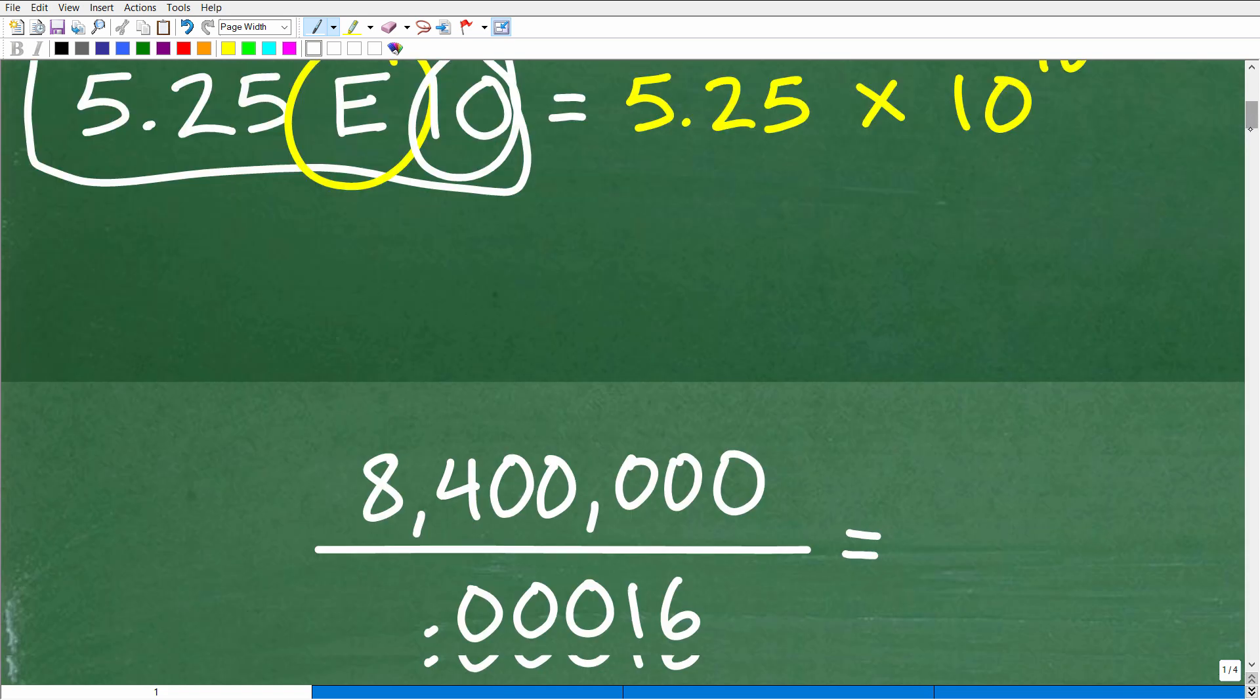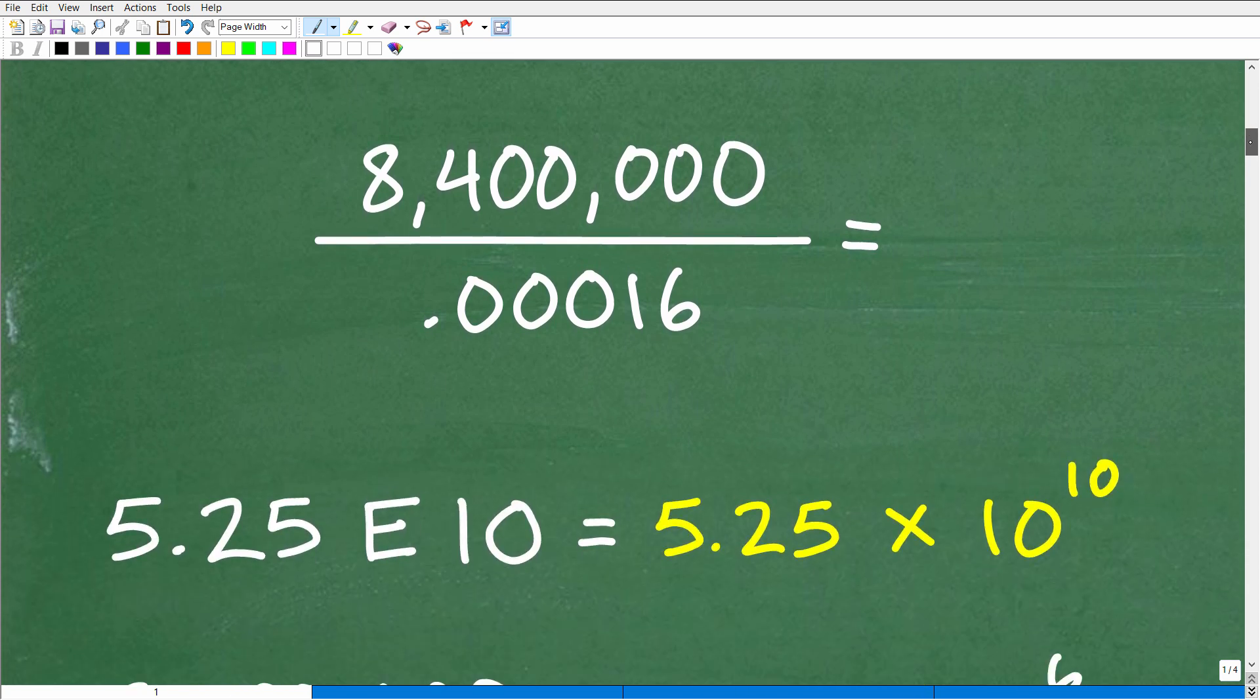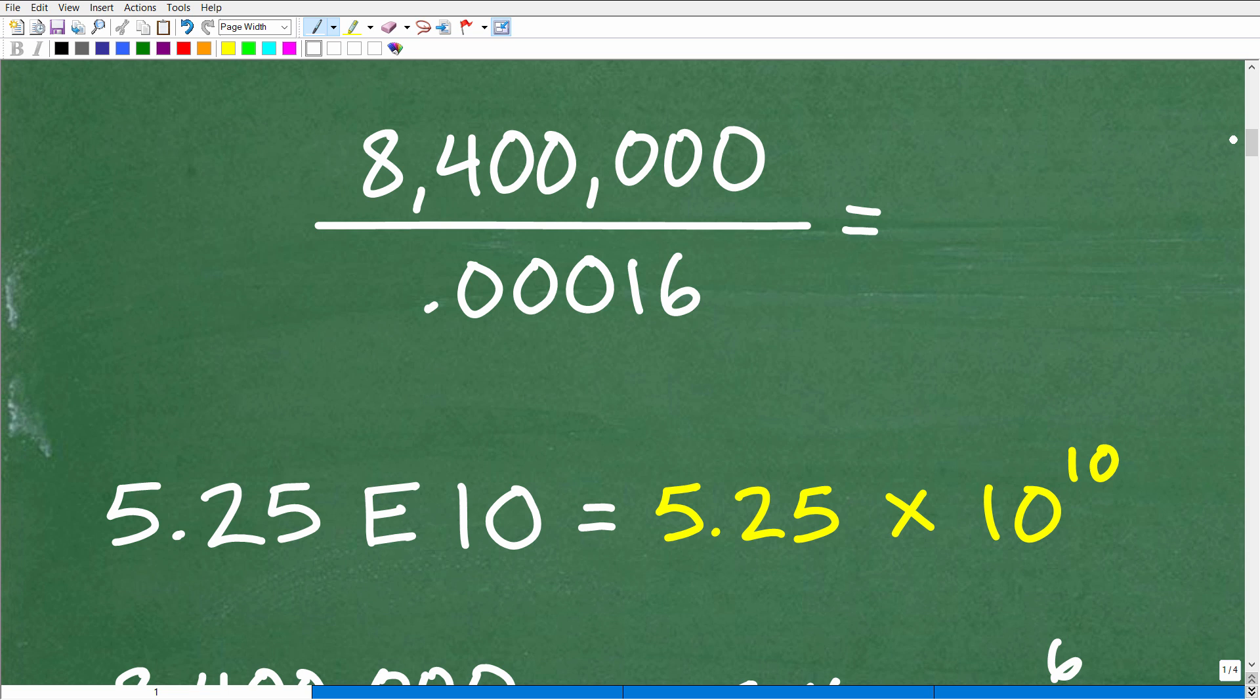But anyways, let's go ahead and take a look at an example problem. Here we have 8,400,000. We're going to divide this by 0.00016. If you want to play along, grab your calculator. Now, if you're using a calculator on your computer or maybe your cell phone, it all depends on how many digits will pop up on your screen. But for most scientific calculators or graphing calculators, you're going to come up with probably something like this.